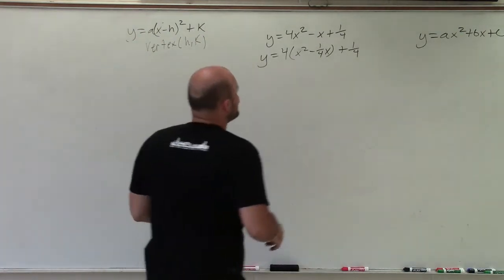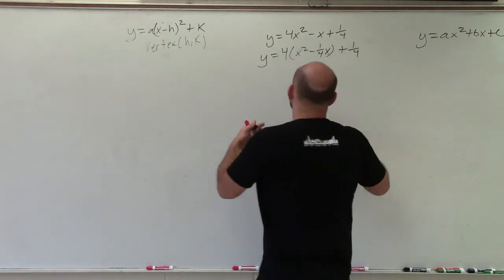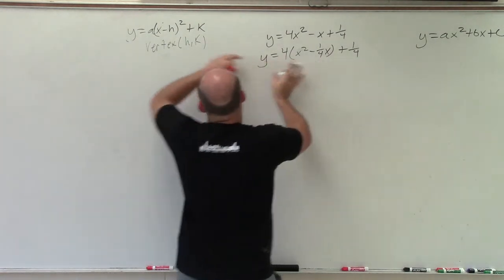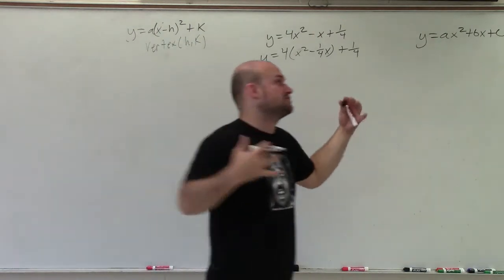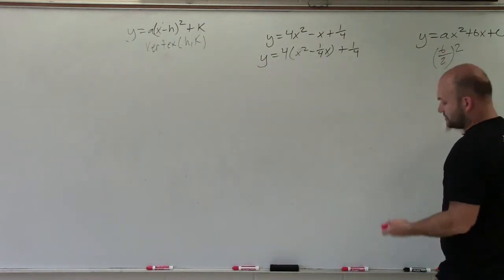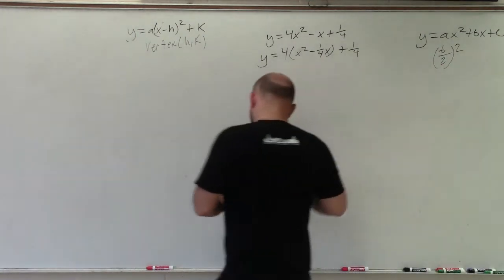The reason why we want to do that is because we need to complete the square. Right now we have a binomial in these parentheses but we want to have it as a binomial squared so we need to produce a perfect square trinomial. To do that we need to take b divided by 2 and square it, where b is my coefficient of my linear term.